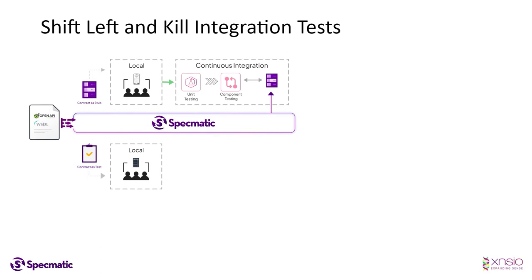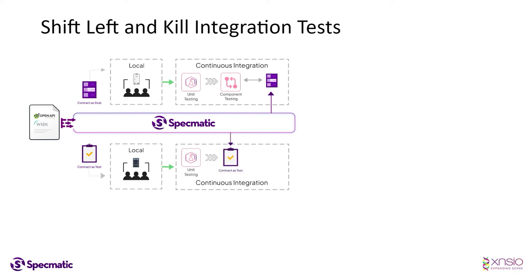Specmatic is just an executable and it can run in any environment — it is completely agnostic of programming languages or technology stacks. The consumer is thereby able to continue being compatible with the API specification even on the CI. For the provider side, once the unit tests are done, we can run the contract tests on the CI server and verify that the API signature is as per the specification before we run the component tests for the provider.